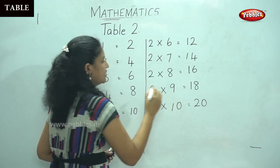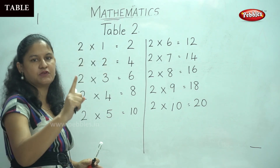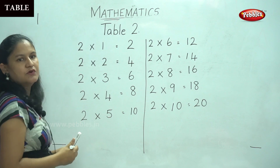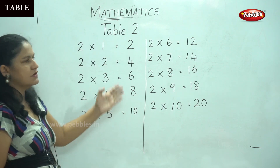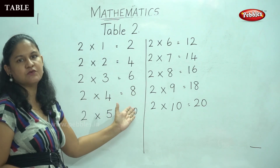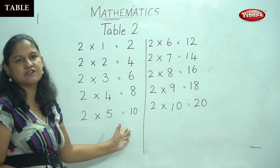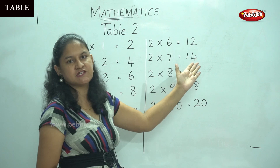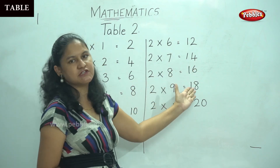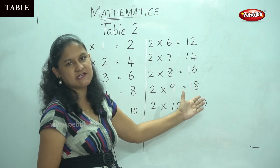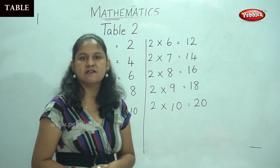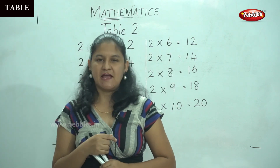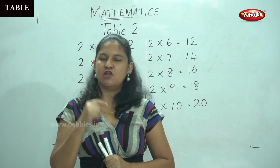So this is our table two. Two times one gives you two. Two times two gives you four. Two times three gives you six. Two times four gives you eight. Two times five gives you ten. Two times six gives us twelve. Two times seven gives us fourteen. Two times eight gives you sixteen. Two times nine gives us eighteen. And two times ten gives us twenty. This is your table two. I do hope you understood table two, and it is very important for you to memorize your tables.